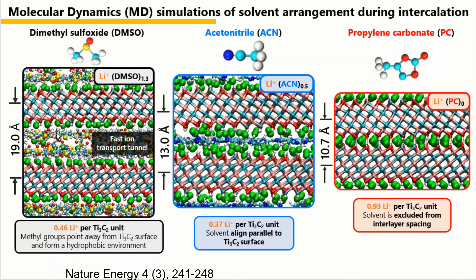We take the lattice parameters from the in situ XRD and perform molecular dynamics simulation to reveal the ion-solvent structure between MXene layers. In the DMSO system, there are 0.46 lithium ions per Ti₃C₂ unit. Lithium ions are attached to the MXene surface to store charge. As the interlayer spacing is large, it allows two layers of solvent molecules. Solvent molecules orient to interact with lithium ions, and the methyl groups on DMSO point away from the surface, forming a hydrophobic environment between the two solvent layers. This environment allows fast ion transport, explaining the low ion transport resistance of the DMSO system.